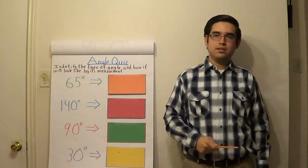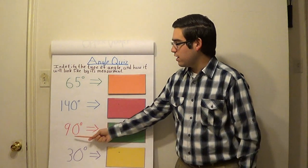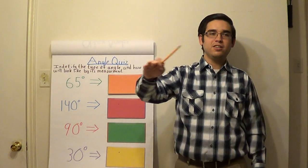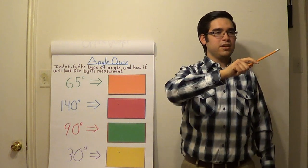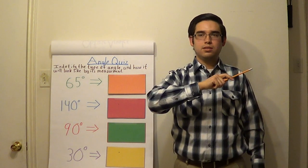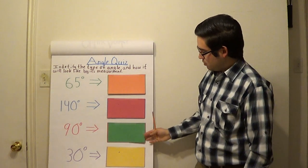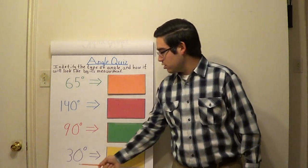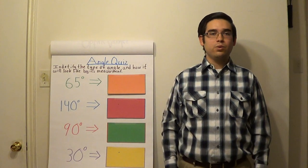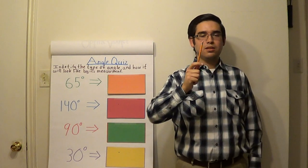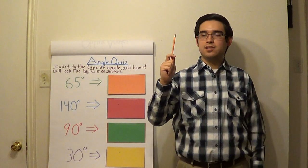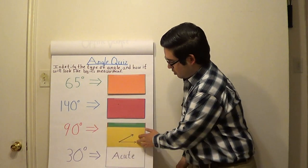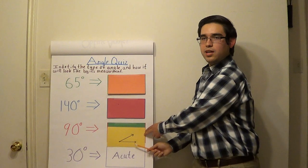Let's consider an angle of 90 degrees. What kind of angle do you think this is? You're saying that's a right angle. What do you guys think it would look like? Let's see if you guys are right. Look at that — that is how it looks, and yes, you were right, it would be a right angle. For our last one, let's consider a 30 degree angle. What kind of angle would that be? You're saying that's an acute. How would it look with your arms? And right again — it would be an acute and it would look like the way you showed with your arms.